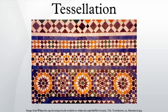Sometimes the color of a tile is understood as part of the tiling; at other times arbitrary colors may be applied later. When discussing a tiling that is displayed in colors, to avoid ambiguity one needs to specify whether the colors are part of the tiling or just part of its illustration. This affects whether tiles with the same shape but different colors are considered identical, which in turn affects questions of symmetry. The four color theorem states that for every tessellation of a normal Euclidean plane, with a set of four available colors, each tile can be colored in one color such that no tiles of equal color meet at a curve of positive length. The coloring guaranteed by the four color theorem will not in general respect the symmetries of the tessellation. To produce a coloring which does, it is necessary to treat the colors as part of the tessellation, and as many as seven colors may be needed.